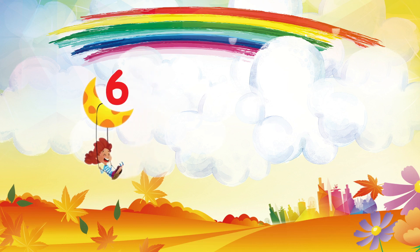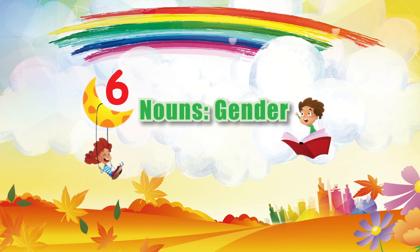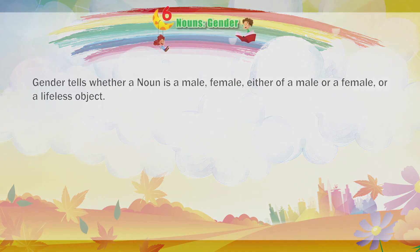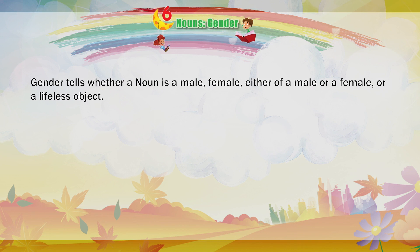Chapter 6: Nouns — Gender. Gender tells whether a noun is male, female, either male or female, or a lifeless object. Thus, there are four kinds of gender.